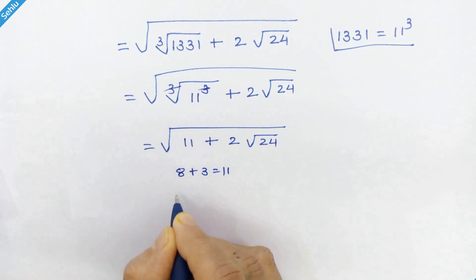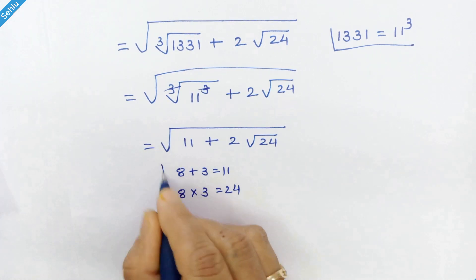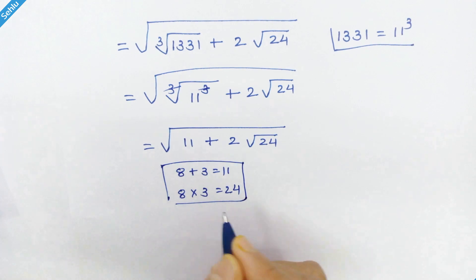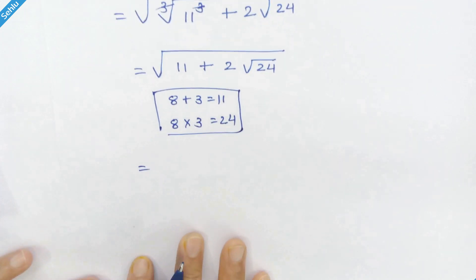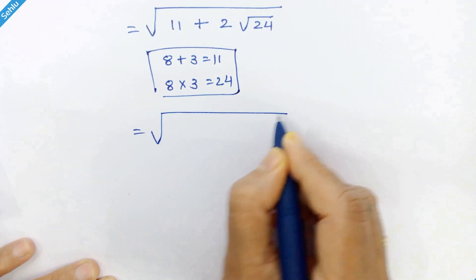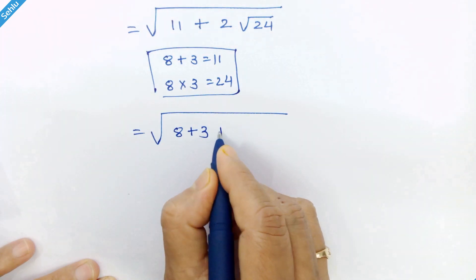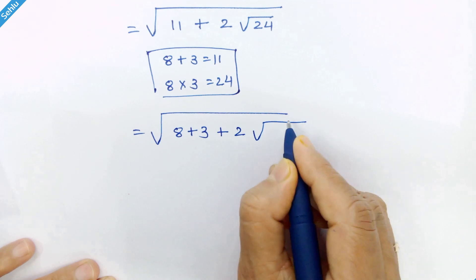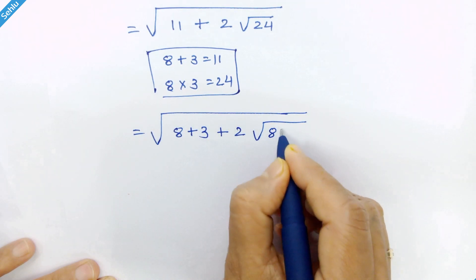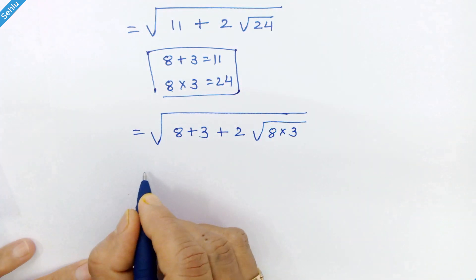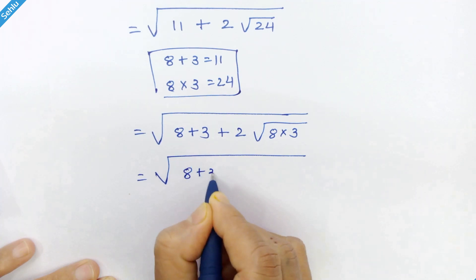Now 8 plus 3 is equal to 11, and 8 times 3 is equal to 24. So in the next step we will put these values in: square root of 8 plus 3 in place of 11, plus 2 times square root of 8 times 3.